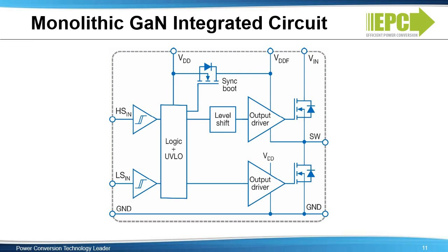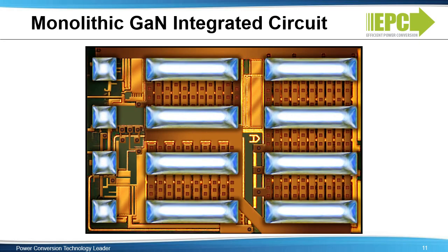Most power conversion applications have at their core a half-bridge in some form. This half-bridge requires drivers and level-shifting functions to drive and synchronize the high-side transistor with the low-side. Shown here is the block diagram showing the chip-scale integrated circuit that implements all of these functions. Once the building block of a half-bridge with drivers and level-shift has been developed, the door is open for producing a wide variety of integrated circuit variants such as full-bridge converters and three-phase power stages. In addition, it's straightforward to add functions and features such as analog and digital interfaces and controls. Here's the actual chip that has all these functions integrated together monolithically.